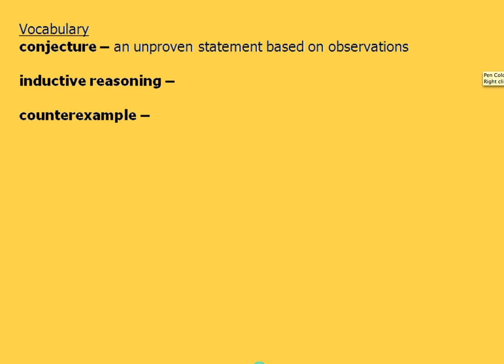Now, let's get into some vocabulary. First word we're going to take a look at is conjecture. And a conjecture is an unproven statement that's based on observations. We're going to be doing a lot of observing in this chapter and taking a look at a lot of different things. And you're going to be making a lot of conjectures.